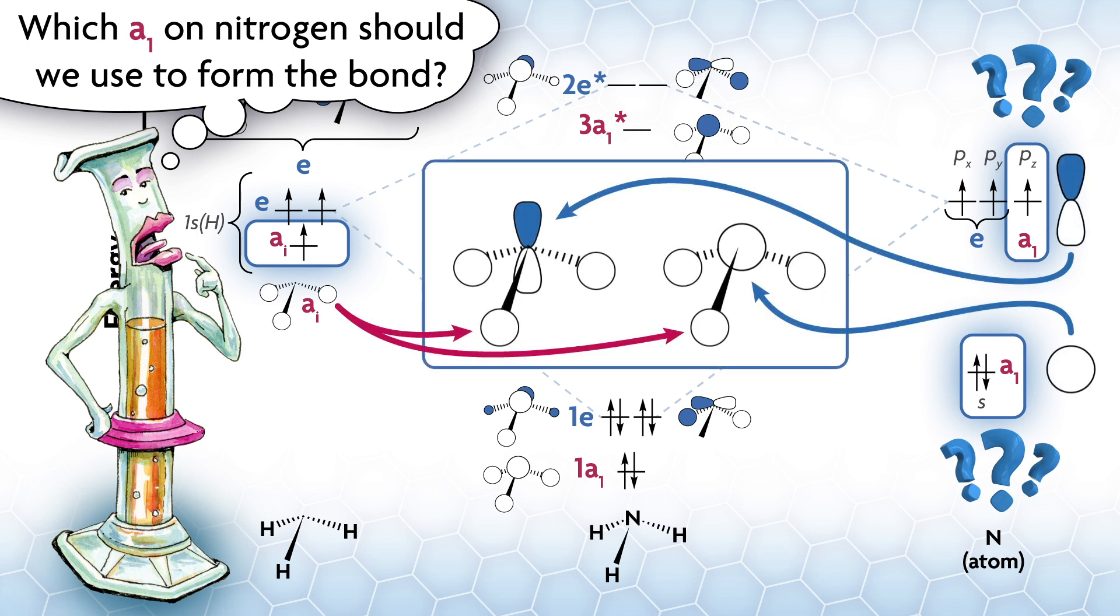Let's look at each of the nitrogen orbitals overlapping with the a1 SALC on the hydrogens. On the left is the pz orbital interacting with this SALC, and on the right is the s orbital. To my eye, the s would seem to give better overlap. There could even be a little antibonding character in the system on the left, depending on the HNH angle. Let's overlap the SALC with the s orbital and leave the pz as it is.